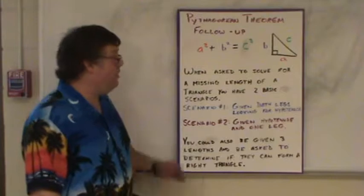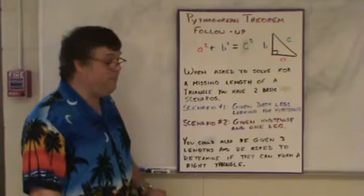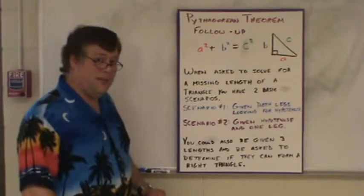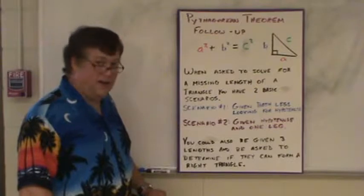Pythagorean follow-up. By now, we should know that A squared plus B squared equals C squared. That is the Pythagorean Theorem, and that helps you find missing lengths of a right triangle. Remember, this only applies to right triangles.